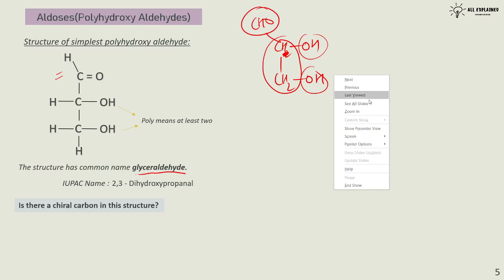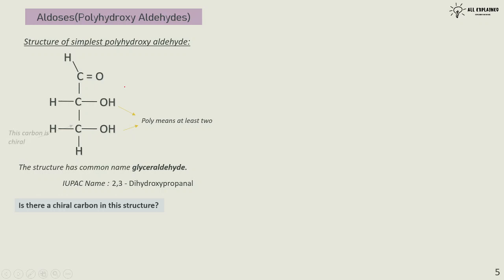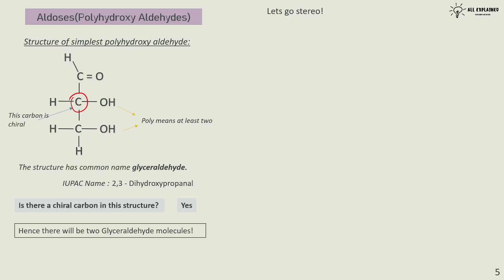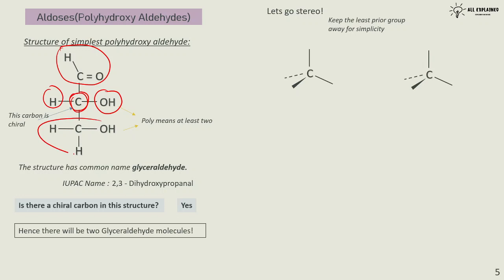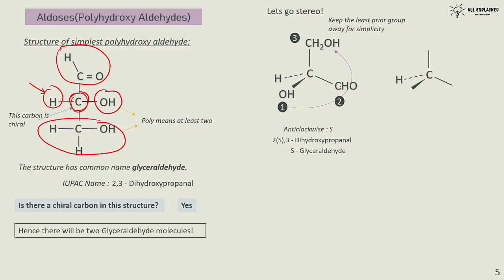Is there a chiral carbon in this structure? Yes — the second carbon from the top is chiral, so it can exist in two configurations. There will be two glyceraldehyde molecules. Going to the stereo representation: the chiral carbon has one H, one OH, one aldehyde group, and one CH₂OH group. H is the least priority group, so placing H away allows easy RS assignment. These three groups in anti-clockwise orientation give S-glyceraldehyde.